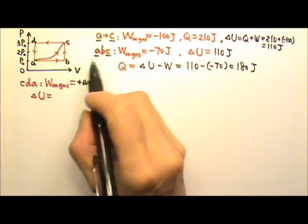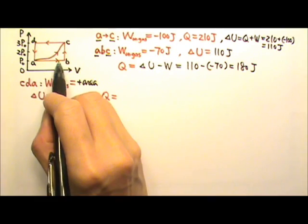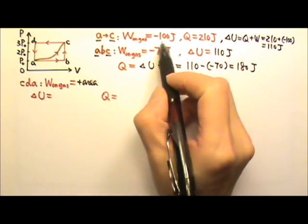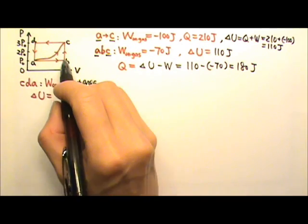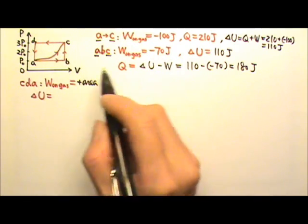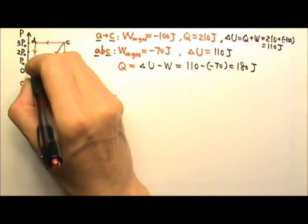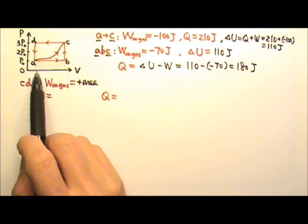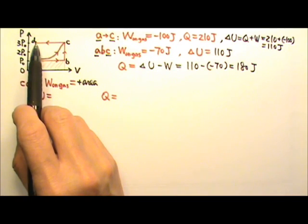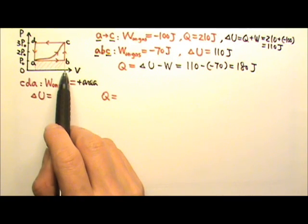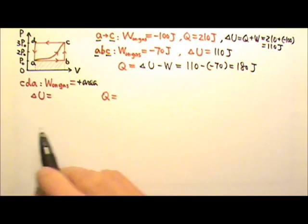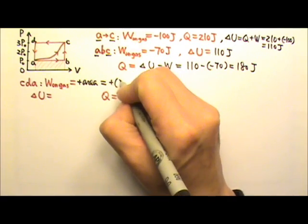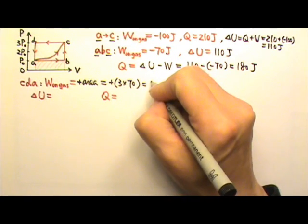The area information we have: the curvy path A to C gives an area of 100 down here, and this rectangle for path ABC has an area of 70. We want a rectangle with the same base but 3 times as tall. Because this area is 70, a rectangle with the same base and 3 times the height must have an area of 70 times 3. So the work done on the gas for path CDA is positive 3 times 70, which is 210 joules.